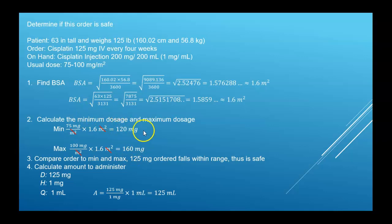So this patient is safe to receive, this 125 pound, 63 inch patient, because this recommendation is based on BSA, is safe to receive 120 to 160 milligrams. What was ordered? 125 milligrams, which is between the 120 and 160. So this order is safe for this patient. So we go ahead and calculate the amount to administer.